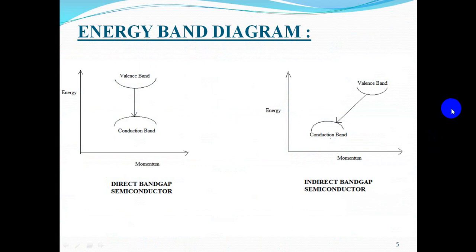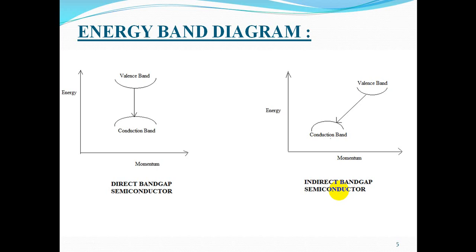This is the energy band diagram of direct bandgap semiconductor and indirect bandgap semiconductor. The bandgap is called direct if the momentum of electrons and holes is the same in both the conduction band and the valence band, and an electron can directly emit a photon. In an indirect bandgap semiconductor, a photon cannot be emitted because the electron must pass through an intermediate state and transfer momentum to the crystal lattice.